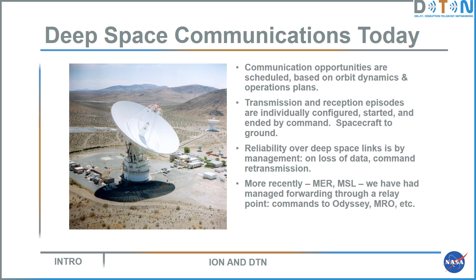The spacecraft transmits directly to the ground, and the ground transmits directly to the spacecraft. Reliability of transmission over these links is managed: if there's a loss of data, that absence is detected by the mission operations team on the ground, and commands are sent to retransmit lost data. More recently, for Mars missions including the Mars exploration rovers and Mars Science Laboratory, we've had managed forwarding through relay points — data from surface vehicles is relayed through Odyssey, MRO, and other orbiting Mars vehicles.